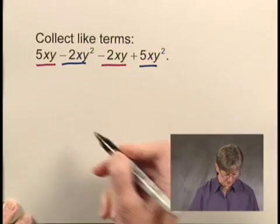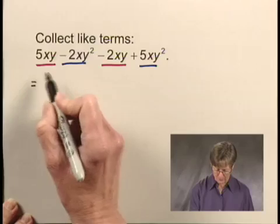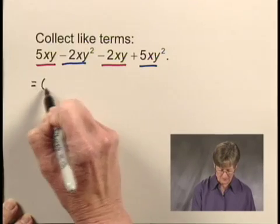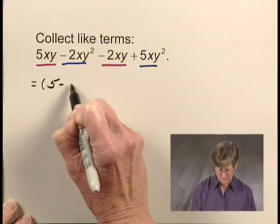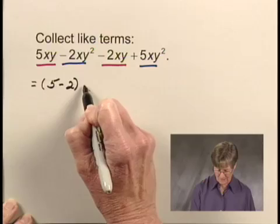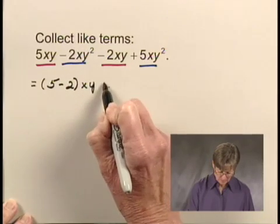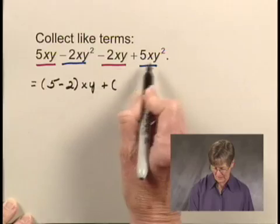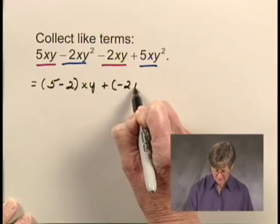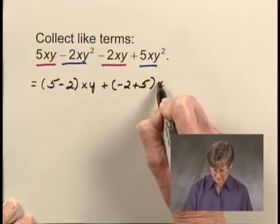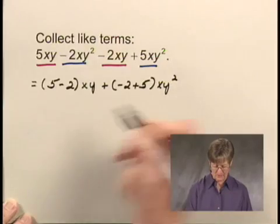And now in collecting like terms, I'm going to put the like terms together, and I can write this as 5 minus 2, the quantity, times xy, plus, and now doing the terms underlined in blue, so I'm going to do negative 2 plus 5xy squared.